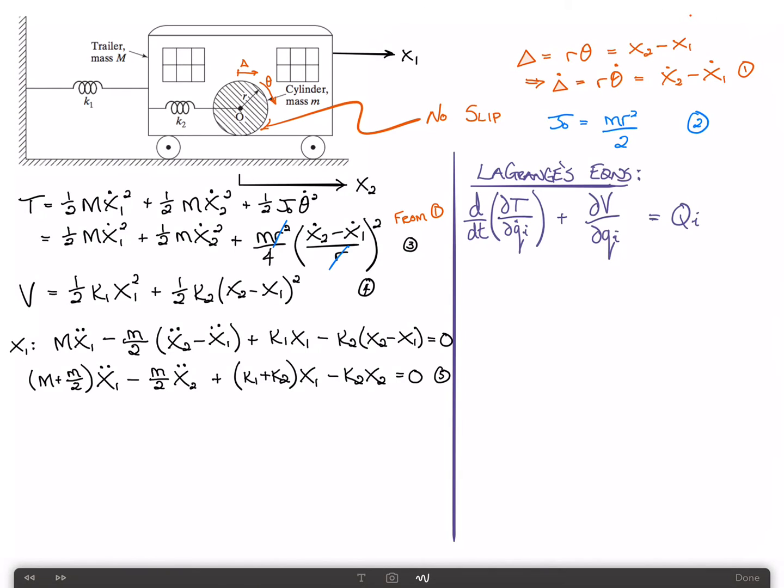For the second equation of motion, we consider the coordinate x2. Taking the time derivative of T with respect to x2 gives us m x2 double dot. The contribution from this term gives us plus m over 2 times x2 double dot minus x1 double dot. And then the contribution from V gives us plus k2 times x2 minus x1, and that is all equal to zero.